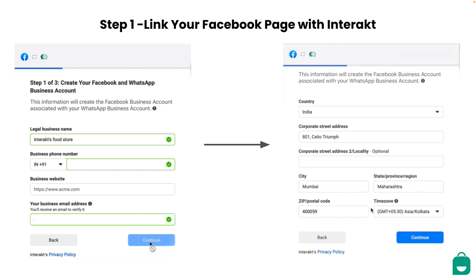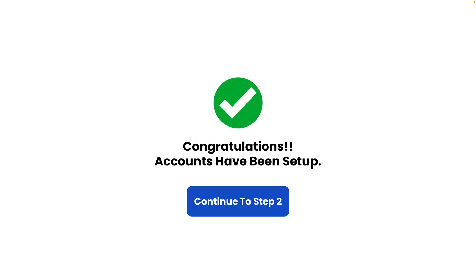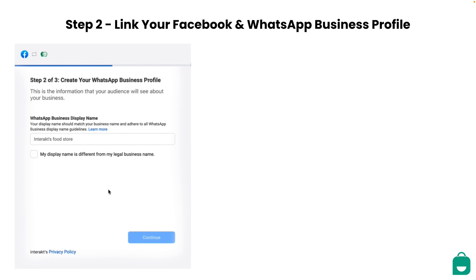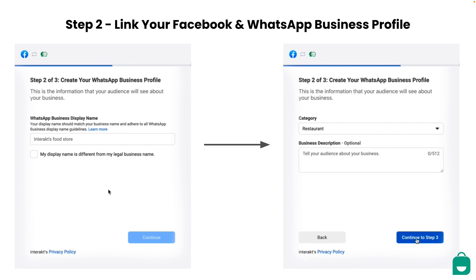Please make sure that your time zone is correctly chosen while you fill up these details. In the second step, you will need to mention a WhatsApp Business Display Name — just enter your business name and make sure that the display name should adhere to WhatsApp Business guidelines. If your display name happens to be different from your business name, you can provide your website link to indicate that it is the same business. Once done, click on Continue. Next, you can choose the category of your business from the drop-down and there is an optional field where you can write a description about your business too. Click on Continue to move to the final step.